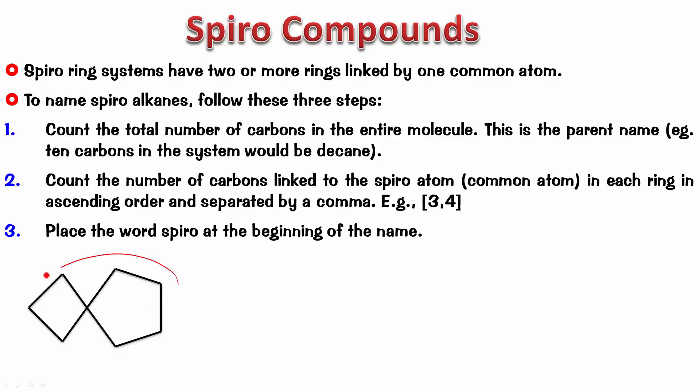So, I want you to name this one. Pause the video, name it, and try to check whether your answer is correct or not. Obviously, on this side I got three, on this side I got four. So, it's spiro[3.4], and the total number is eight. So, spiro[3.4]octane.